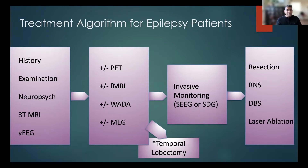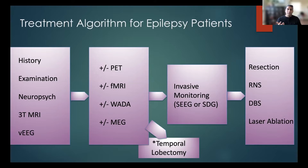Oftentimes, a patient who has failed multiple medications — at least two to three, but on average many more — goes to our epilepsy neurology group. At that point, they get a history, examination, neuropsych evaluation, a high-resolution MRI, and video EEG. That's the workup we do for almost all of our epilepsy patients who are medically refractory.